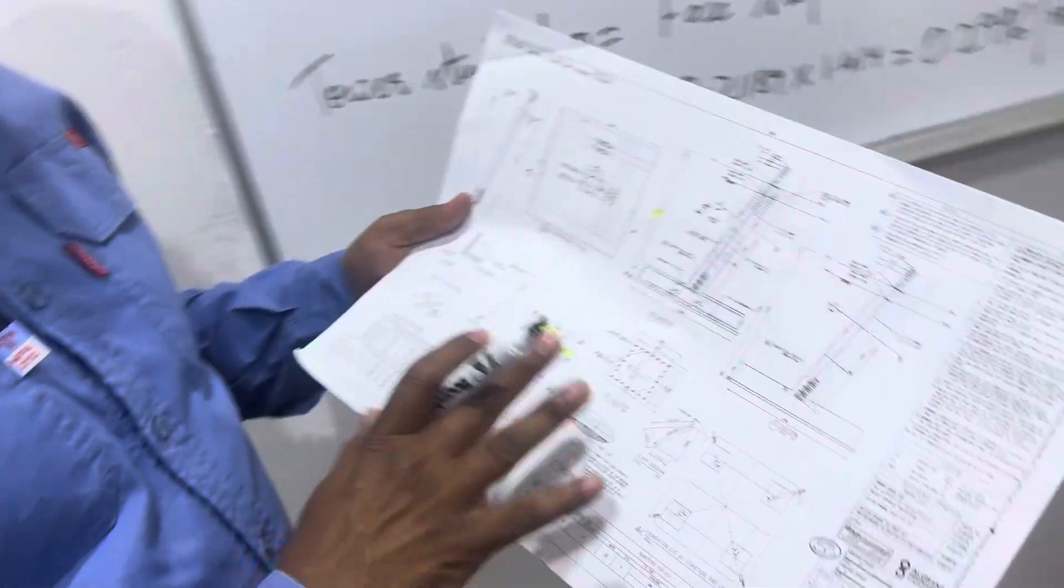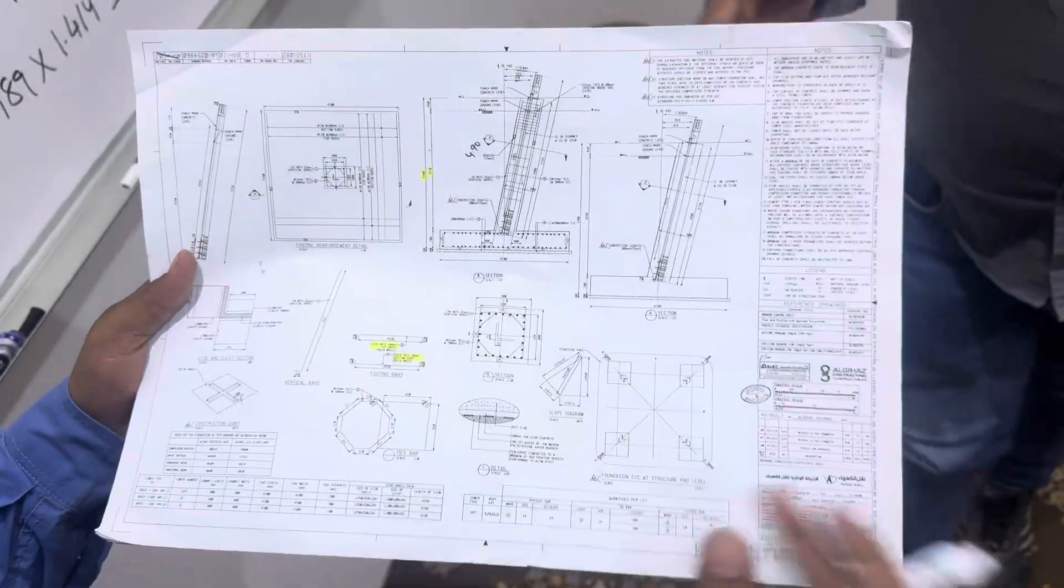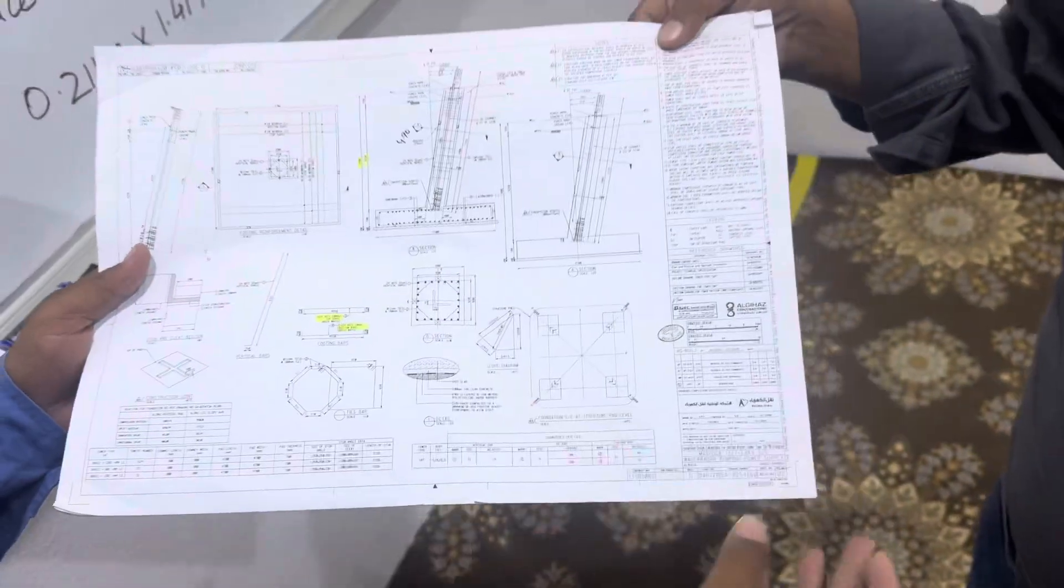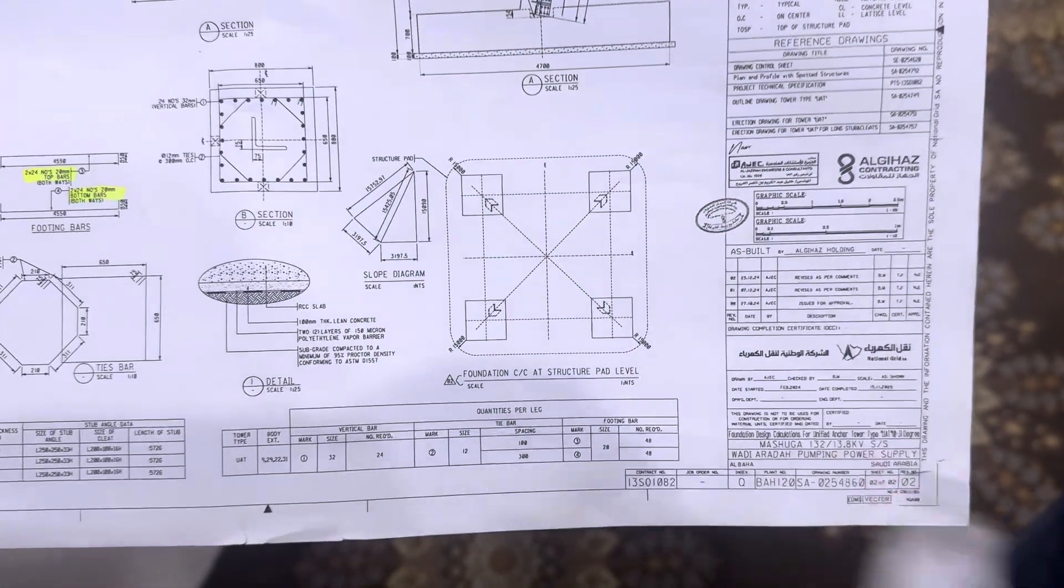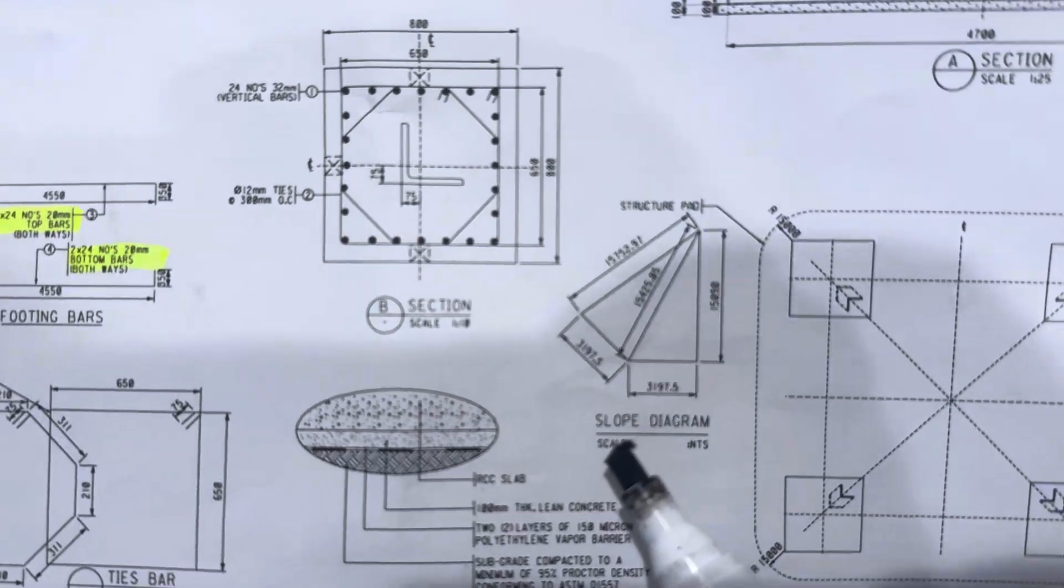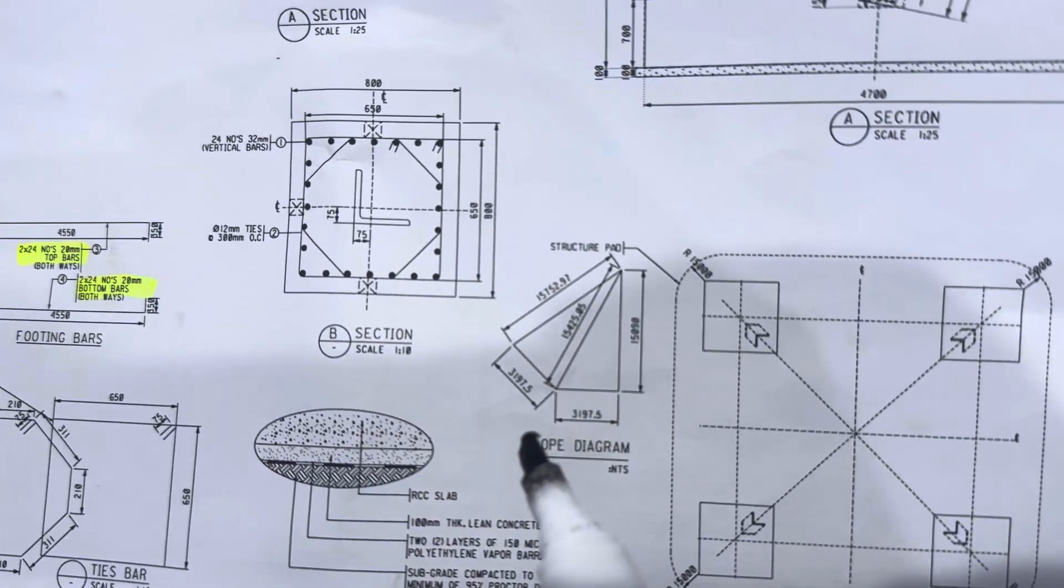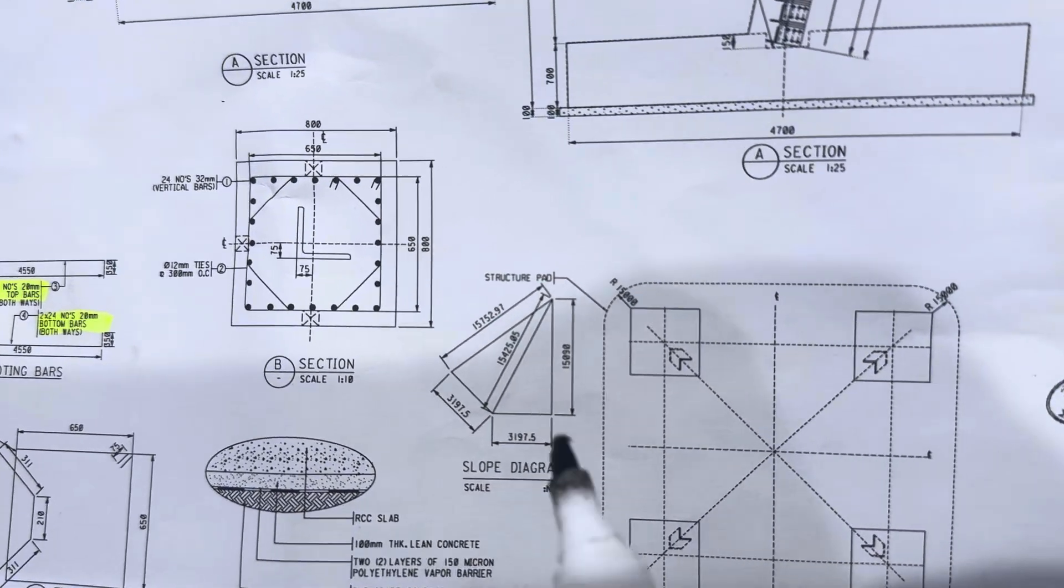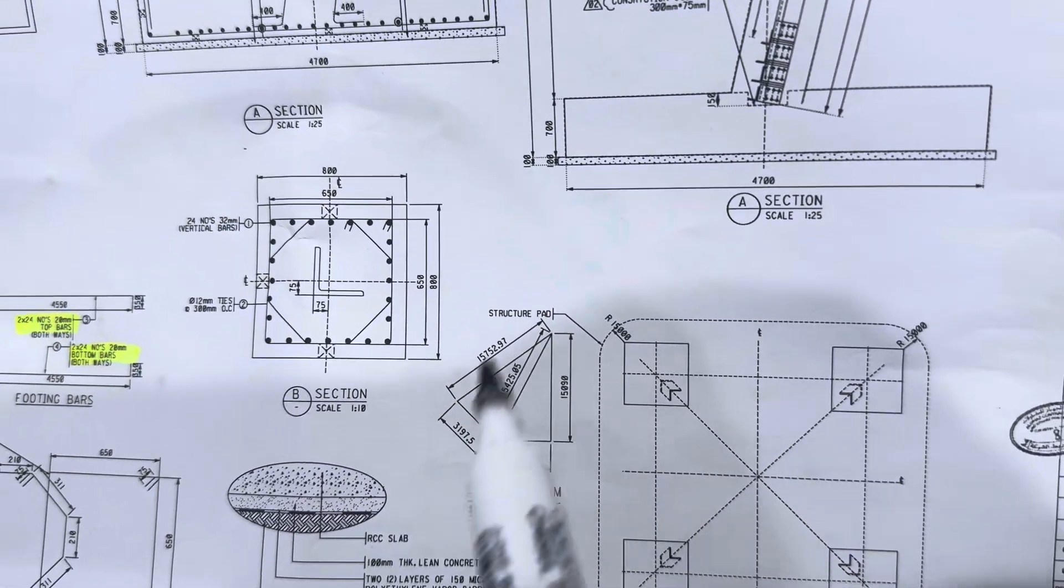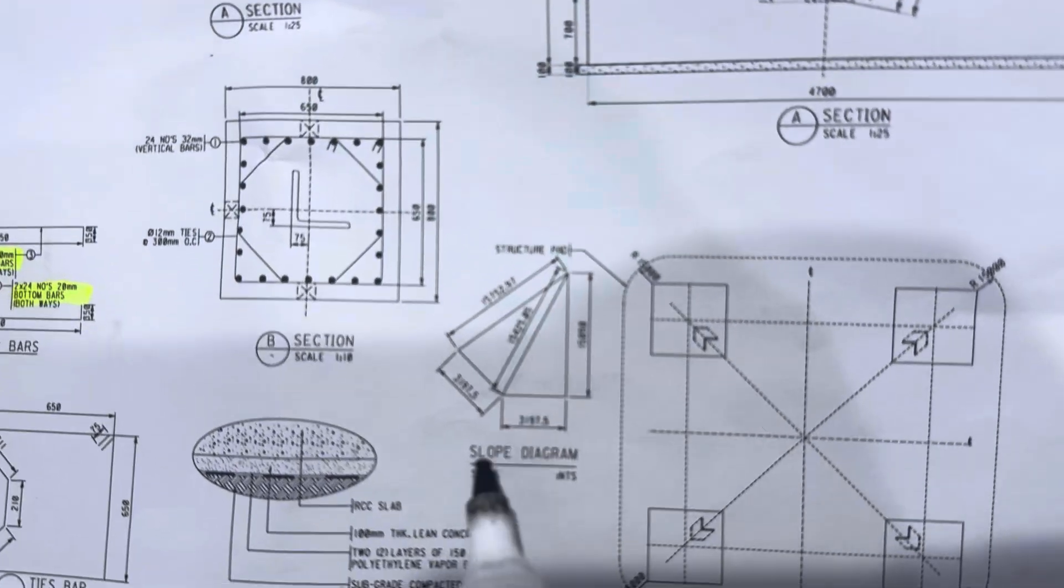So normally we have drawing like this. For any project you work we have different kind of towers. So this is we are talking about UAT tower. So here is given slope diagram. So you always have this diagram in every project and every different kind of towers they will provide you this slope diagram. This is called slope diagram.